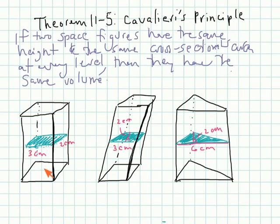If two space figures, so we could take these two right here, have the same height, now the height's not labeled here. Let's say the height of this is 15 centimeters. And the height of this, since it's tilted, it would actually be running through the middle here. But let's say this is also 15 centimeters. If two figures have the same height and the same cross-section area at every level, now I've only illustrated one level, but you could see that this would be true for the whole thing.